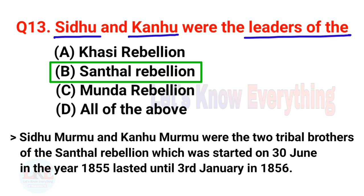Question number 13: Sidhu Murmu and Kanhu Murmu were the two tribal brothers of the Santhal Rebellion, which started on 30th June 1855 and lasted until 3rd January 1856.